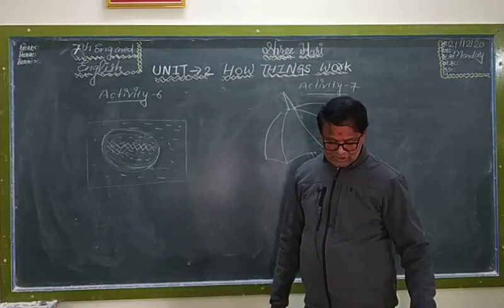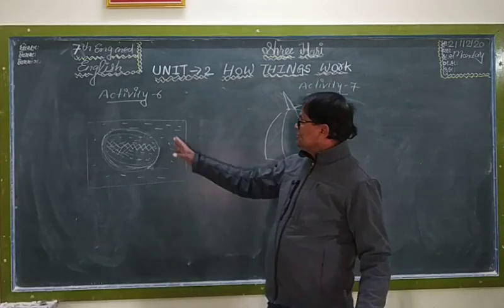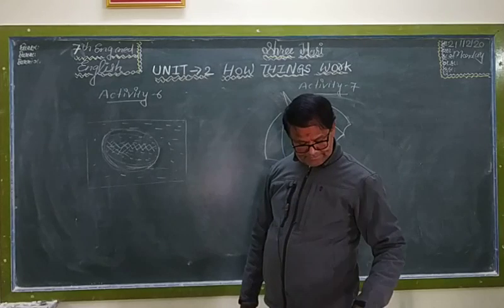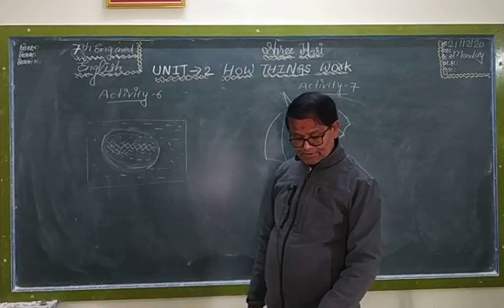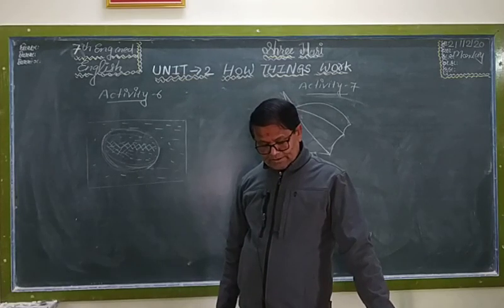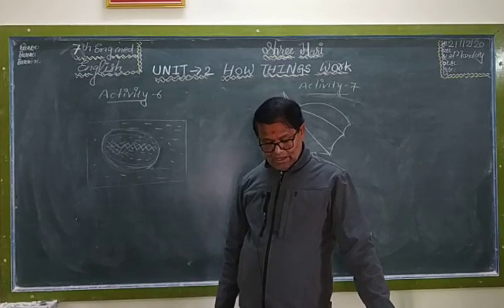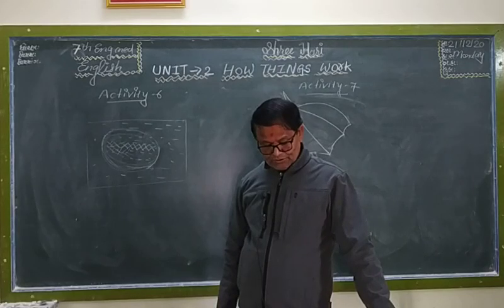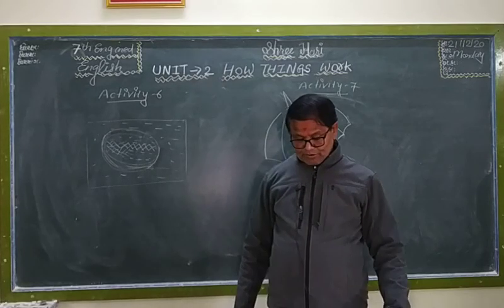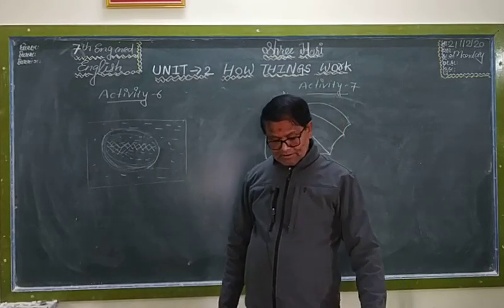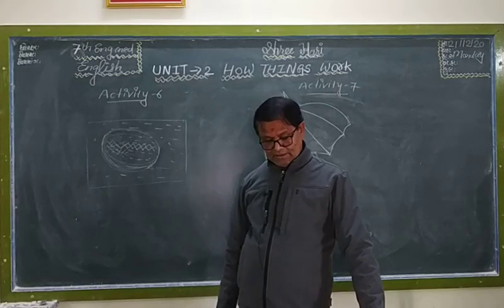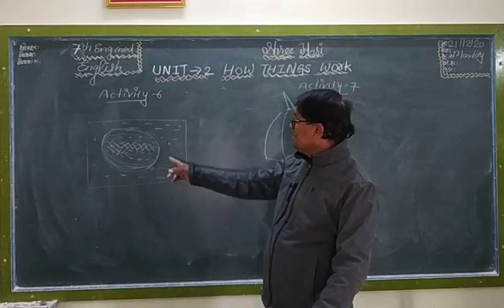So look at this picture of a drop of water. Yeh chitra dekho, is mein paani ka boond hai — drop of water, paani ka boond. Work with a group or partner to use the information in 'how does it do that' — aap partner ke saath kaam karo aur information lo ki yeh kaise kaam karata hai.